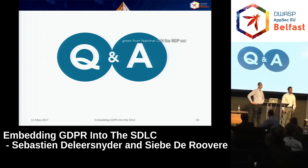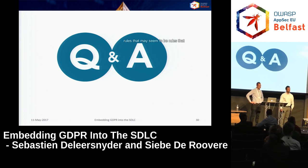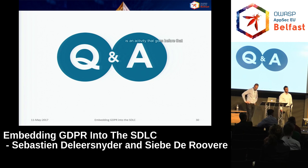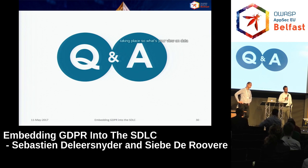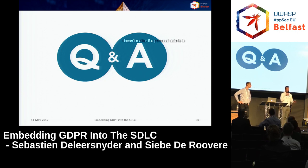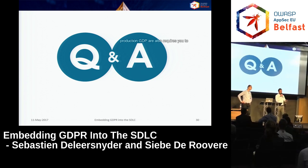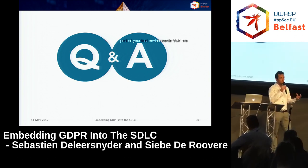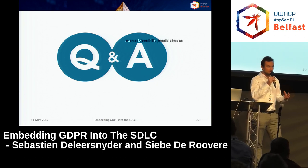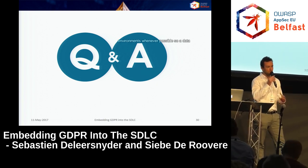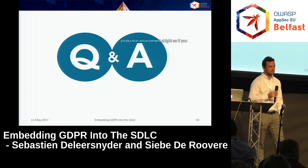A question from Tony Green at National Grid: GDPR rules seem to apply to systems in production, but what about data migration and system migrations that occur before production? The response: the GDPR applies to all personal data regardless of whether it's in a development phase or in production. GDPR requires you to protect your test environments as well, and even advises using pseudonymized or anonymized data in test environments whenever possible. A data breach within a test environment is as serious as a data breach in a production environment.